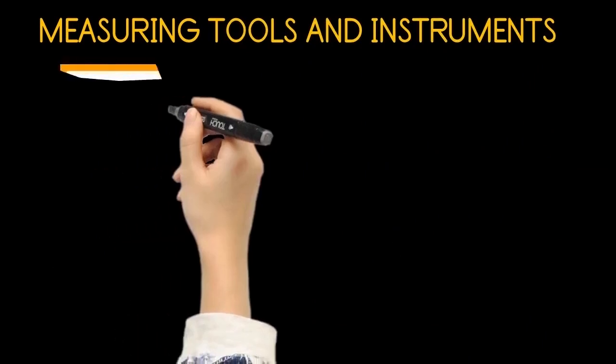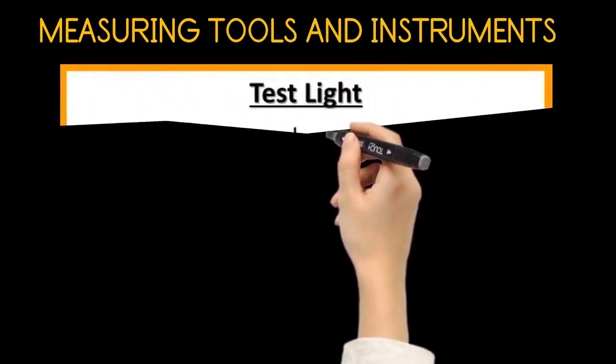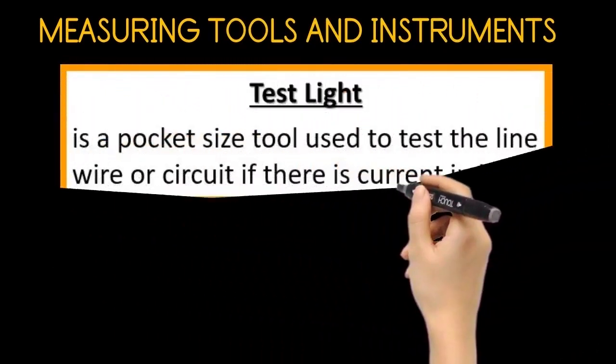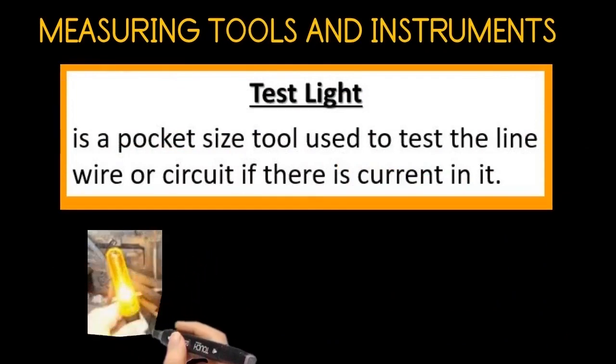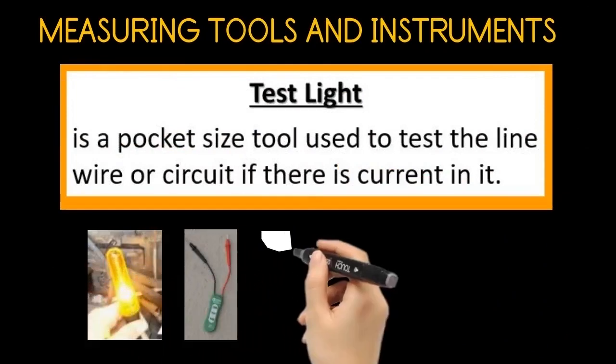The first measuring tool is the test light. The test light is a pocket-size tool used to test the line wire or circuit if there is a current in it. Here are some examples of test lights.